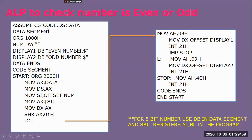As usual, we are going to define the code segment and data segment. In the data segment, at address location 1000h, we are going to reserve a space for a 16-bit number, and that space is named as 'num'. We will also define two display strings. We end the data segment with 'data ends', then start the code segment and begin writing the program from the 2000h location. We load the data segment address into AX with 'MOV AX, data' and make it active by sending it to the data segment register.